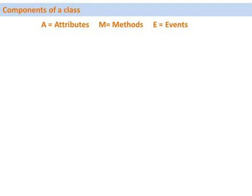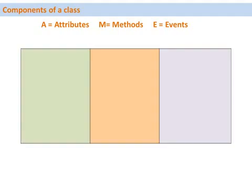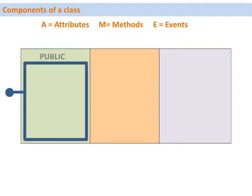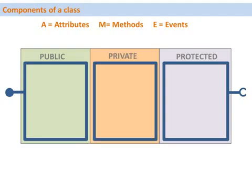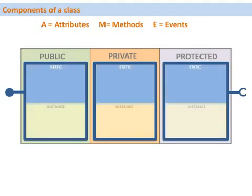Let's have a closer look at the components of a class. A class has attributes, methods, and events. A class has three different visibility sections: these are public, protected, and private. Within each visibility section it is possible to have the components of the class — like attributes, methods, and events — as static components.